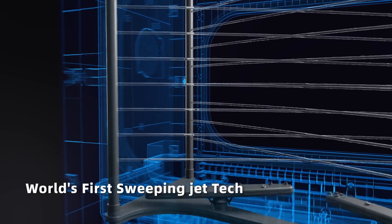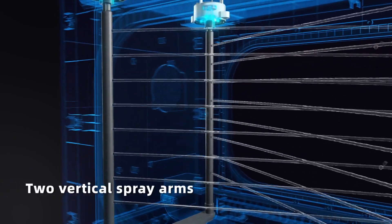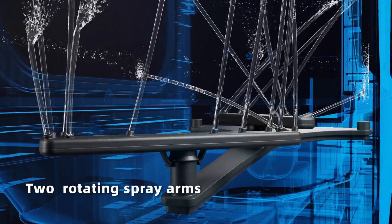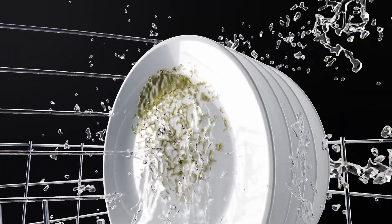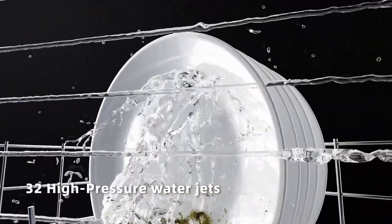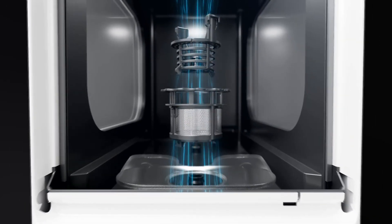R1 is equipped with the world's first sweeping jet technology. Driven by motors, two vertical spray arms effectively cooperate with the two rotating spray arms to reach every corner through 32 high-pressure water jets. The triple filtration system can effectively discharge food residues.